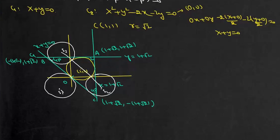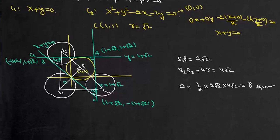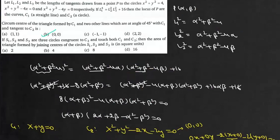Joining the centers, the perpendicular from point P to side S2S3 has length S1P = 2r = 2√2, and the base S2S3 = 4r = 4√2. The area of the triangle is (1/2) × 2√2 × 4√2 = (1/2) × 8 × 2 = 8 square units. So the area of the triangle is 8 square units — option C.